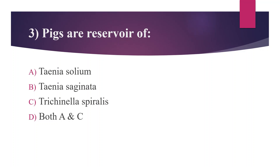Third question: Pigs are the reservoir of option A. Taenia solium, option B. Taenia saginata, option C. Trichinella spiralis, option D. Both A and C. Sometimes we don't read all the options and quickly select the first one, since pigs are the intermediate host of Taenia solium. But Trichinella spiralis is also correct. So the answer is option D, Both A and C. Pigs are reservoir of Taenia solium and Trichinella spiralis.